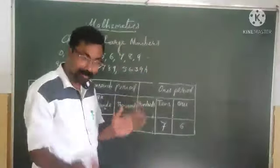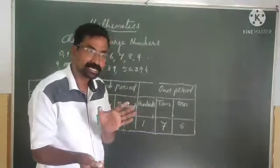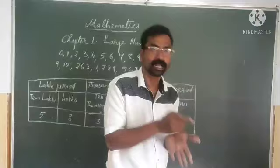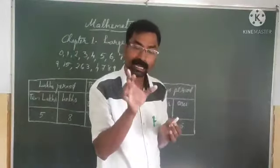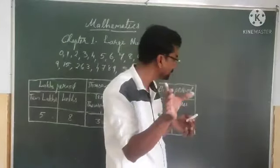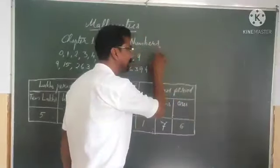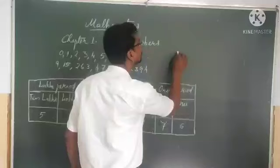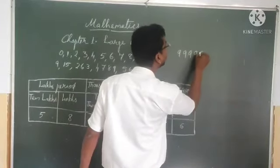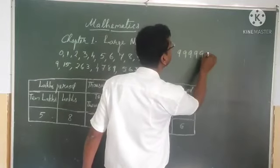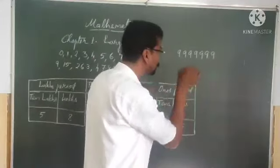So after that, how to make the largest and lowest numbers? To make the largest number, suppose if you want to write largest seven digit number, seven nines are together. That means 9, 9, 9, 9, 9, 9, 9. How many nines are here? Seven nines.